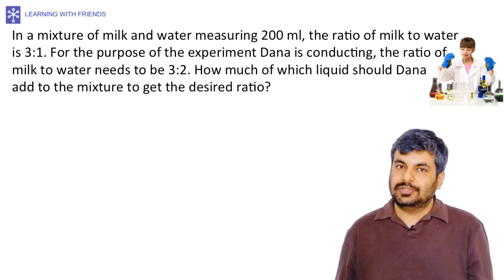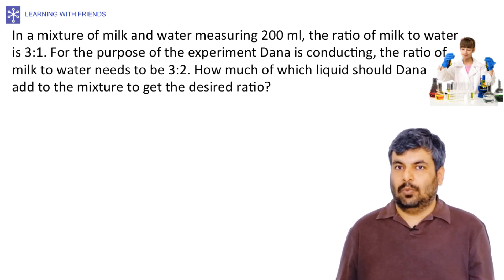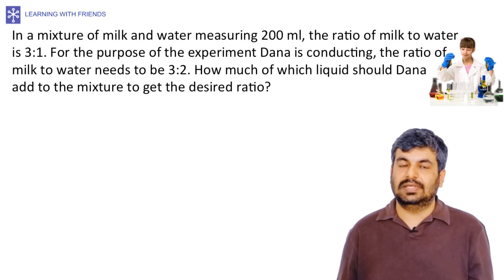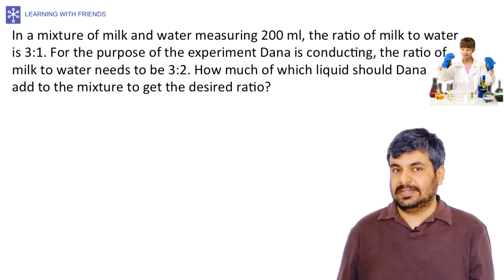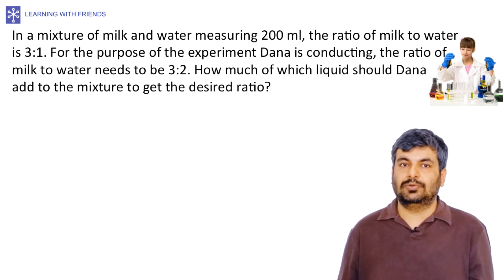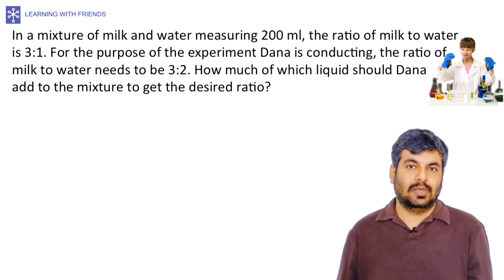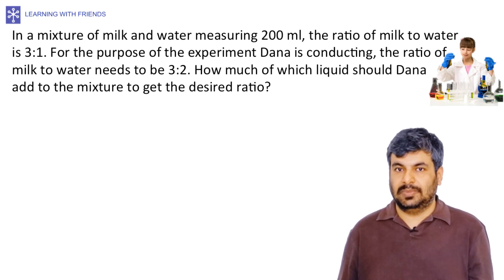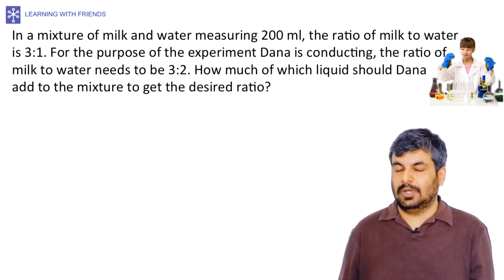Let's look at a slightly tougher ratio problem. In a mixture of milk and water measuring 200 ml, the ratio of milk to water is 3:1. For an experiment Dana is conducting, the ratio needs to be 3:2. How much of which liquid should Dana add to the mixture to get the desired ratio?